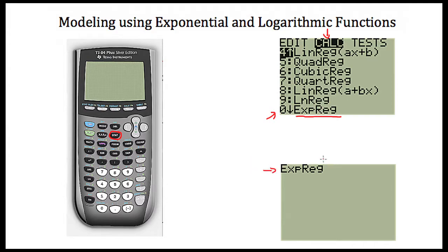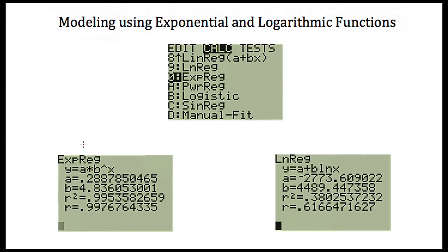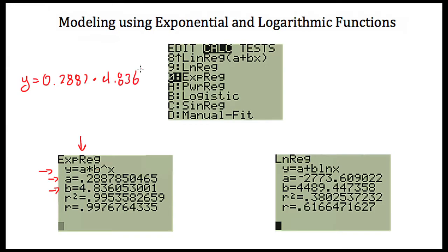Exponential regression will show up on your screen — just hit enter, and you should get a screen with the equation for our exponential model: y is equal to a times b to the x power, with our a and b values given. So for this model, the number of zombies y is equal to 0.2887 times 4.836 to the x power, where x is the number of days.